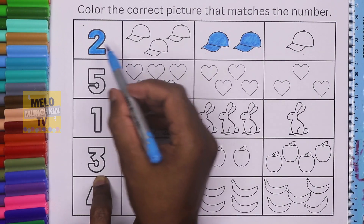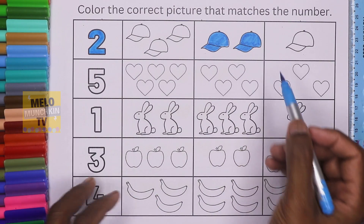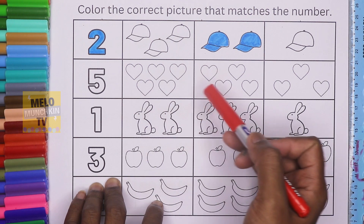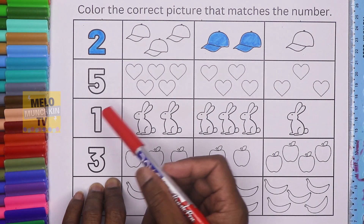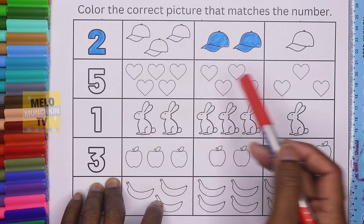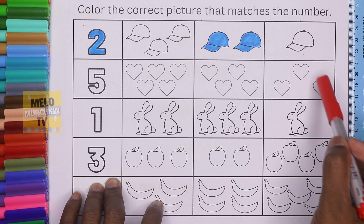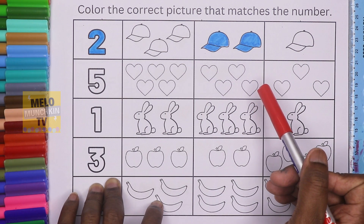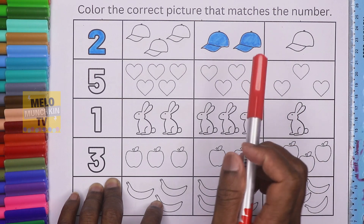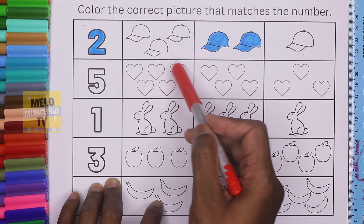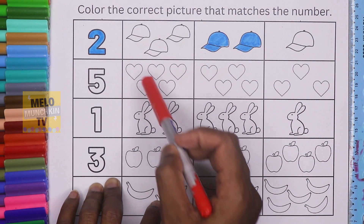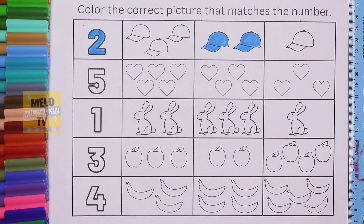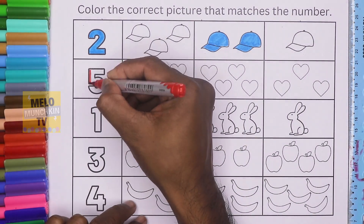Two caps — first one is done! Let's go to the second one. The second number is five. Which box has five hearts? Let's check — starting from the last one: one, two, three — that's three. The second box: one, two, three, four — that's four. The last one: one, two, three, four, five — so this is the correct box! Let's color five — this is red color.